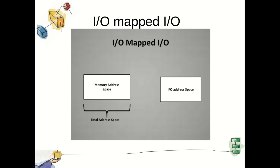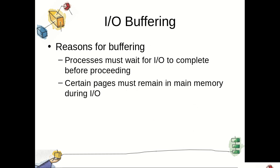In IO mapped IO there are separate instructions for input/output read and input/output write. In case of both memory mapped IO and IO mapped IO, different separate address lines are available for communication. In case of memory mapped IO only a single line is available for communication, and both addressing modes are available inside the program.